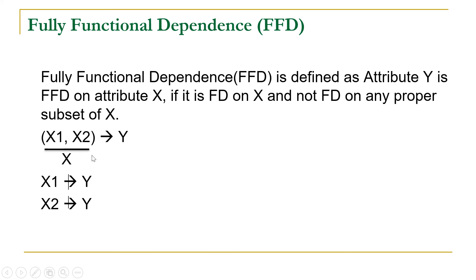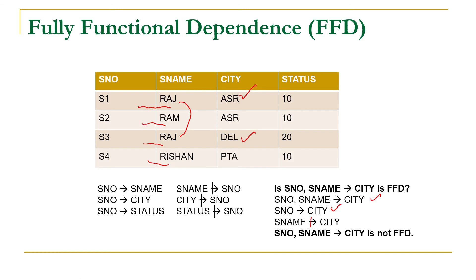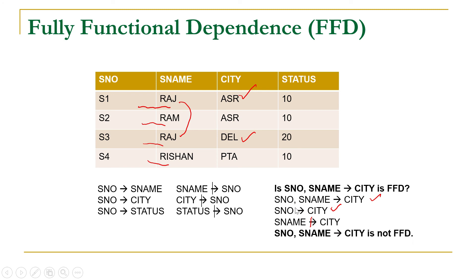From the definition of fully functional dependence, Y should be functionally dependent on the combination but should not be functionally dependent on any subset. In our case, city is dependent on one subset of X — that is S number — but according to the definition of fully functional dependence it should not be functionally dependent on any subset. Since it is dependent on S number, this does not satisfy the case of fully functional dependence. So we can conclude that the combination S number and S name to city is not fully functional dependent.